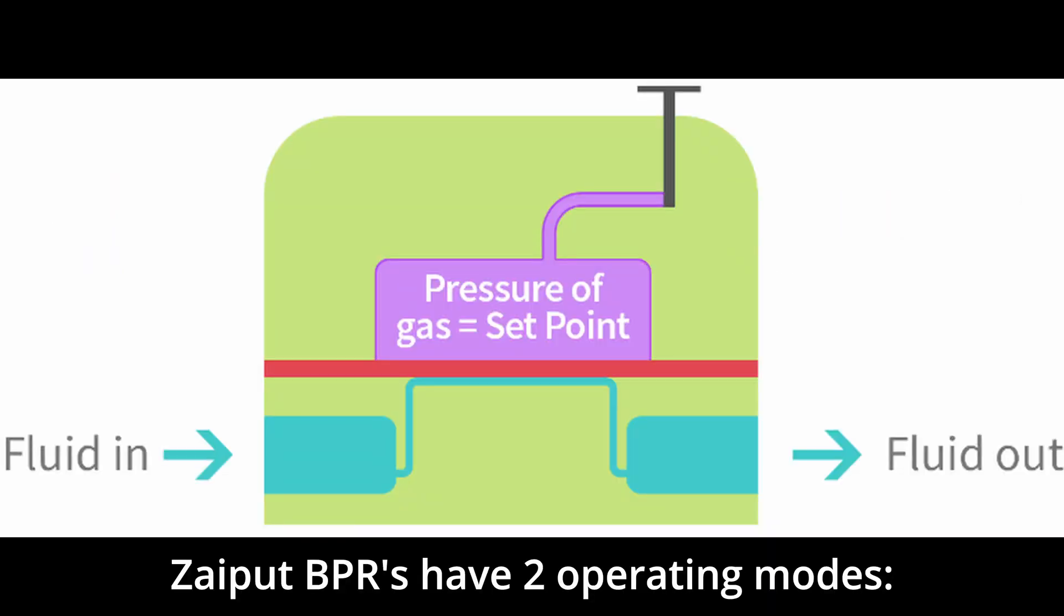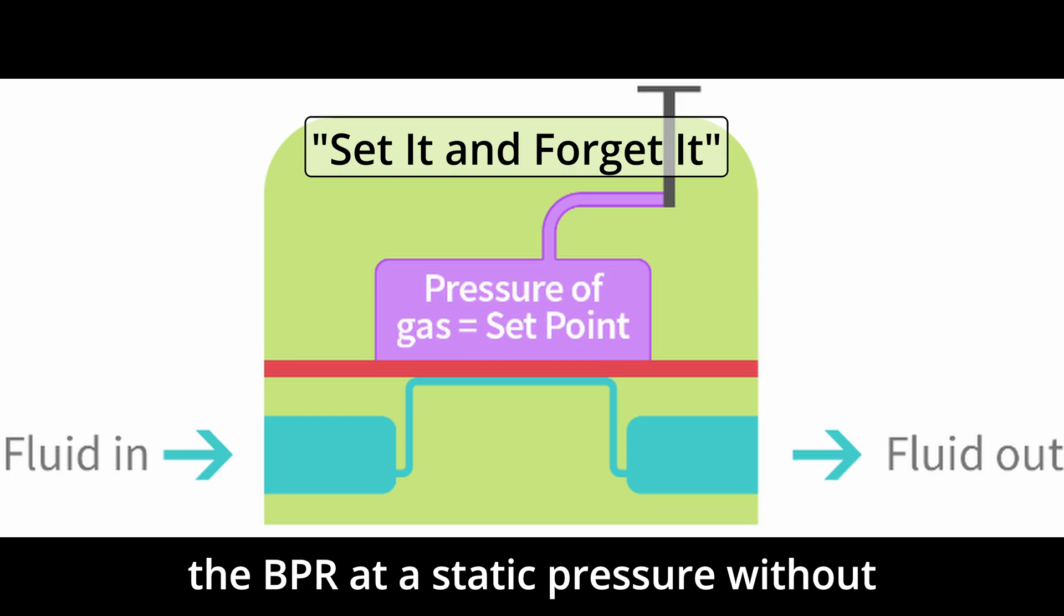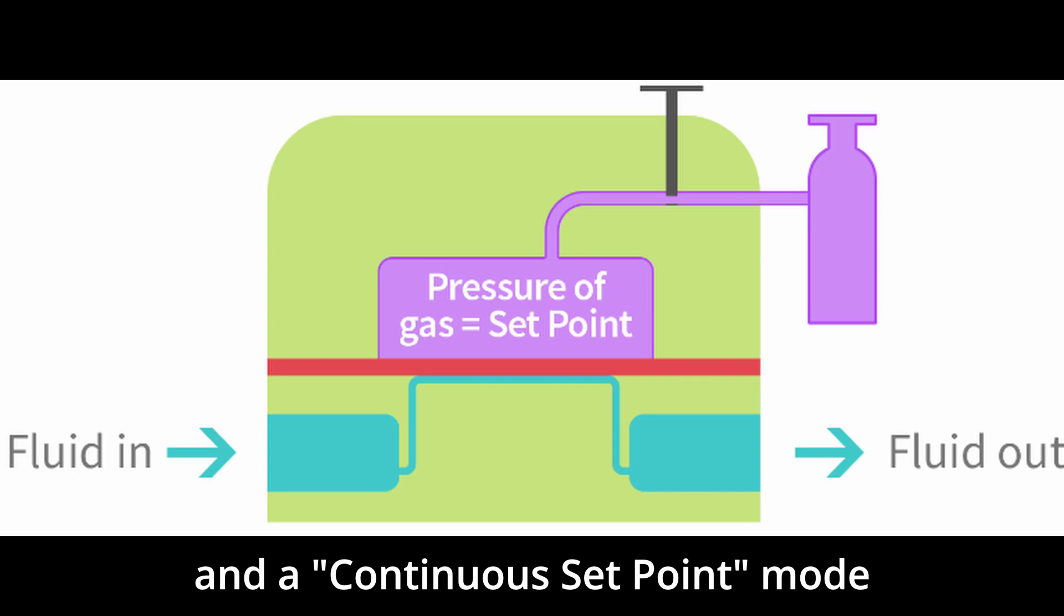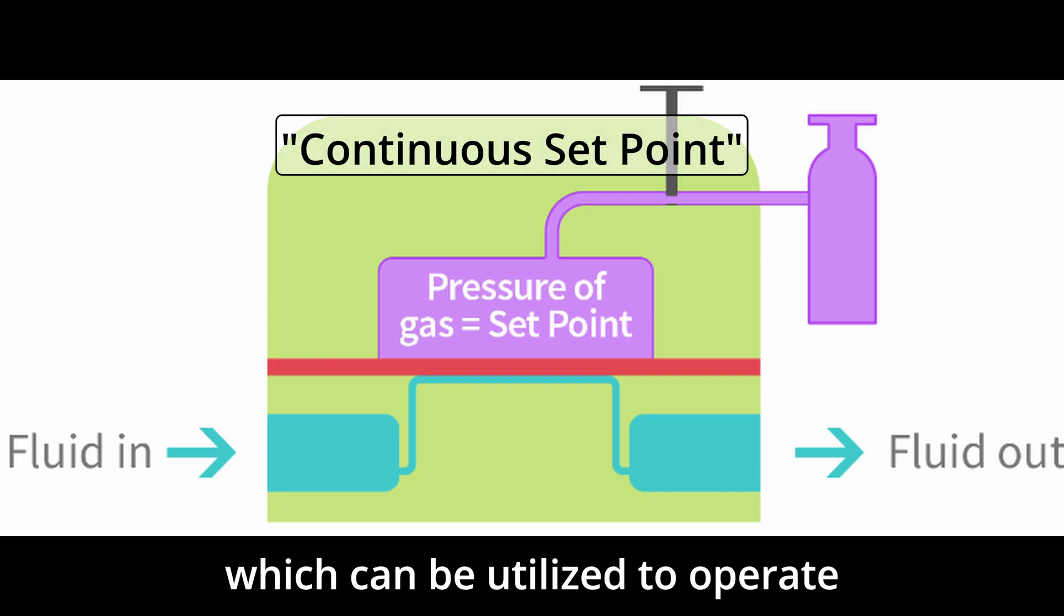Ziput BPRs have two operating modes. A set it and forget it mode which can be utilized to operate the BPR at a static pressure without the need for a continuous gas source. And a continuous setpoint mode when a continuous gas source is available, which can be utilized to operate the BPR at varying pressures for processes which require dynamic operating pressures.